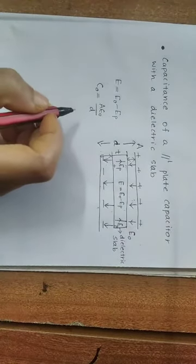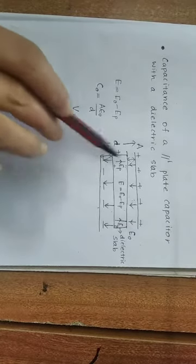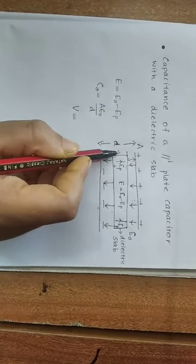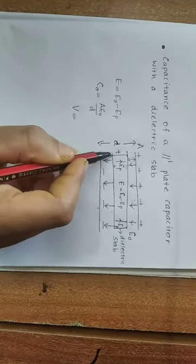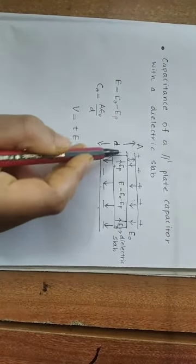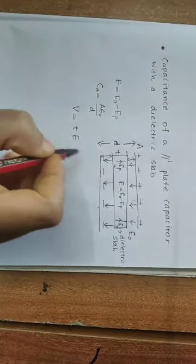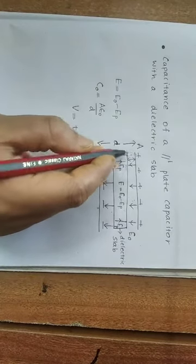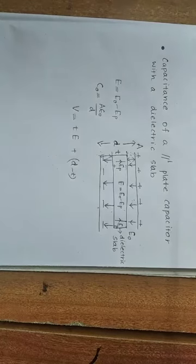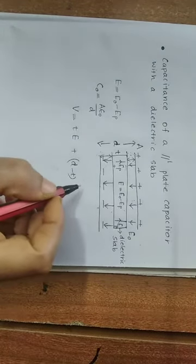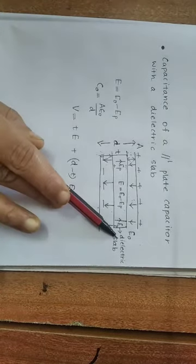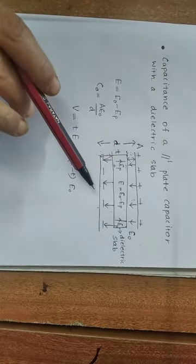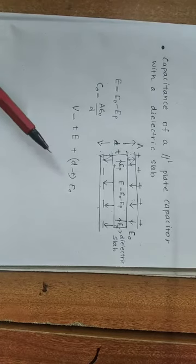The total potential difference V is due to contributions from both regions. For the region of thickness T inside the slab, the potential difference contribution is E into T. For the region of thickness D minus T outside the slab, the contribution is E0 into (D minus T). So V is equal to E·T plus E0·(D minus T).